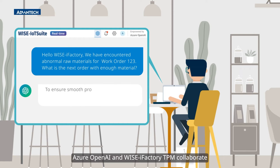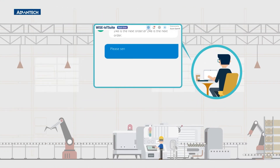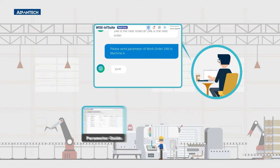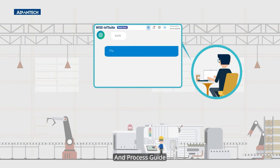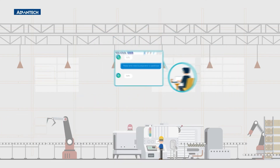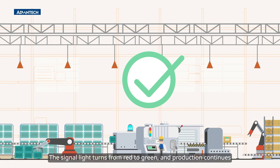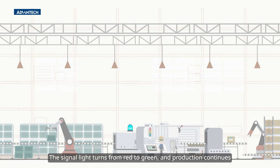Azure OpenAI and WiseEye Factory TPM collaborate to obtain the fastest work order switch and preparation status. Issue the parameter guide and process guide. Notify the arrangement of the operation. After confirming that the material has arrived and the process is correct, the signal light turns from red to green and production continues.